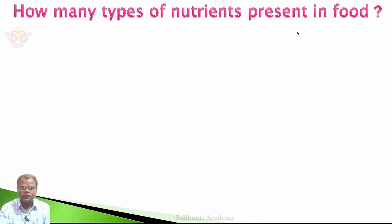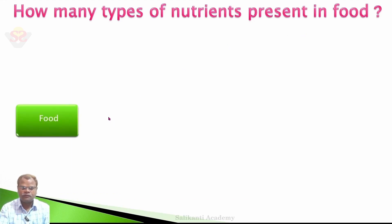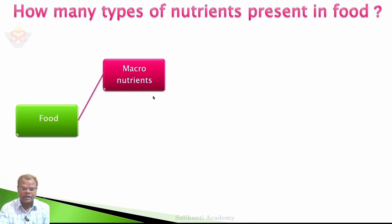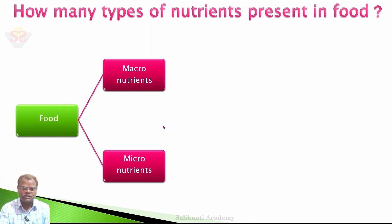How many types of nutrients are present in food? There are two types of nutrients present in food. One is macronutrients. The second one is micronutrients.